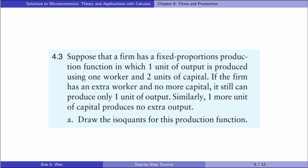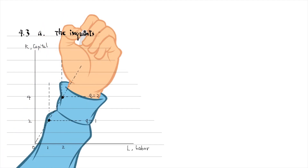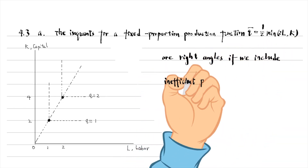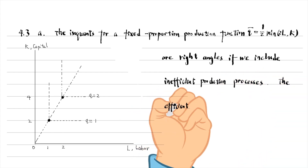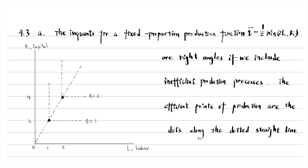Let's go to exercise 4.3. Suppose that a firm has a fixed proportions production function in which one unit of output is produced using one worker and two units of capital. If the firm has an extra worker and no more capital, it still can produce only one unit of output. Similarly, one more unit of capital produces no extra output. In part A, draw the isoquants for this production function. The isoquants for a fixed proportion production function are right angles if we include inefficient production processes. The efficient points are the dots along the dotted straight line where the firm uses inputs in a fixed proportion of 1 to 2.